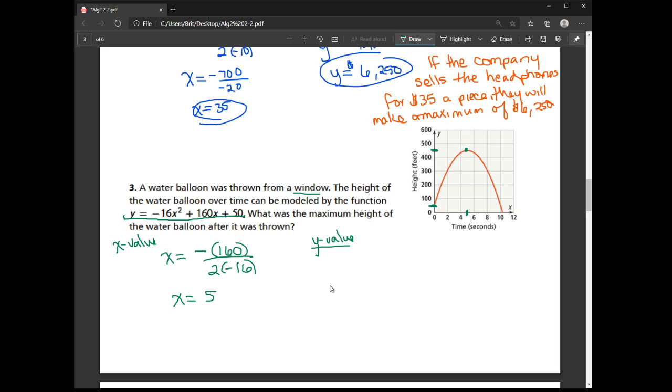So now for the y value of the vertex, we're going to take that 5, and we're going to plug it into the function. So negative 16 times 5 squared, plus 160 times 5, plus 50.